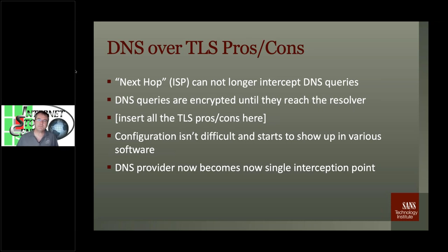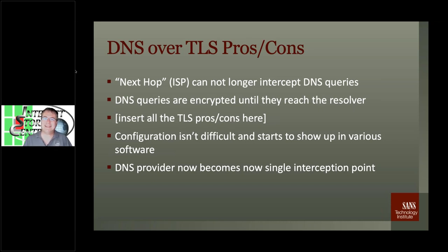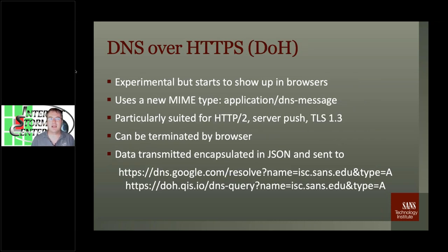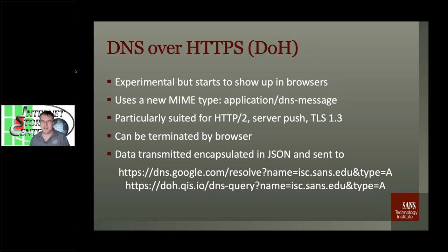Your ISP can no longer listen in if you configure TLS correctly. But you're now instead trusting a specific DNS provider you're connecting to, which becomes your single point of failure as far as privacy is concerned. The other problem with DNS over TLS is it uses a special port — if someone wants you to stop using it, they can just close port 853 and it's game over; you have to use normal DNS.